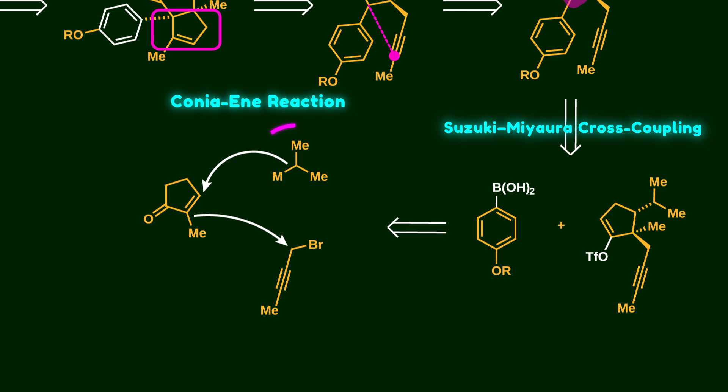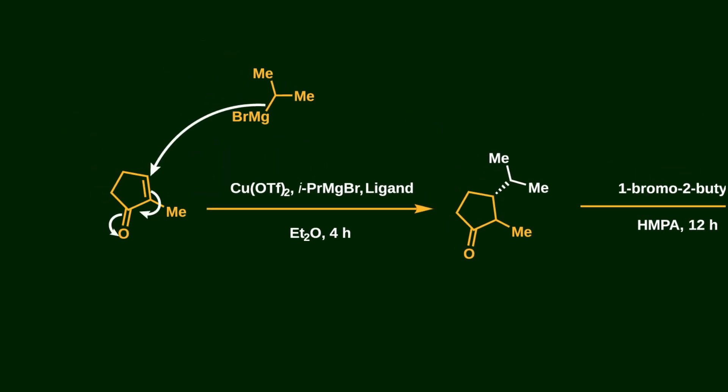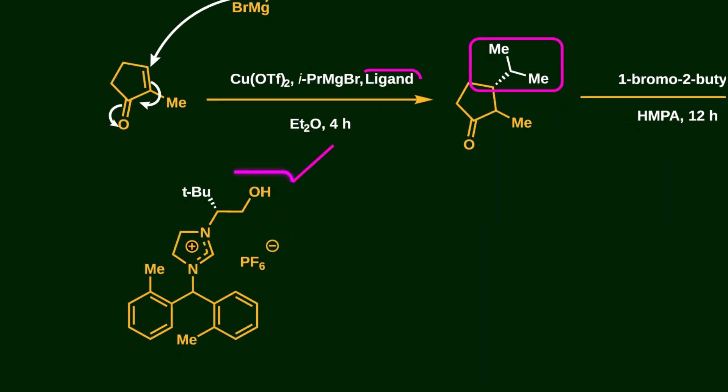Now let's go through the forward synthesis. The first step is a 1,4-addition of an isopropyl group to cyclopentanone, but it's not a simple Michael reaction because the isopropyl group needs to be installed below the plane of the ring. So a chiral N-heterocyclic carbene is used as a chiral ligand with copper triflate to induce chirality.